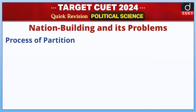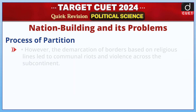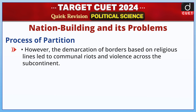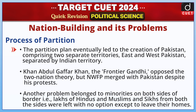The process of partition was initiated with the Muslim League's promotion of the two-nation theory in 1940. According to this theory, areas with a Muslim majority should form a separate state. However, the demarcation of borders based on religious lines led to communal riots and violence across the subcontinent. The partition plan eventually led to the creation of Pakistan, comprising two separate territories, East and West Pakistan, separated by Indian territory. Khan Abdul Ghaffar Khan, the frontier Gandhi, opposed the two-nation theory, but NWFP merged with Pakistan despite his protest.